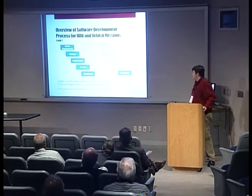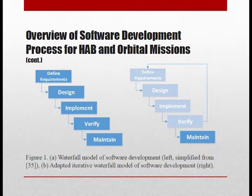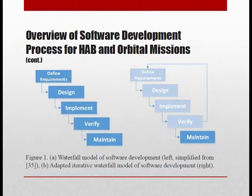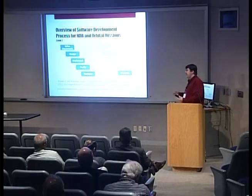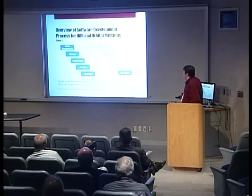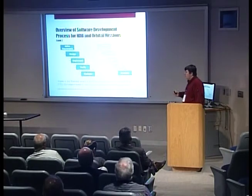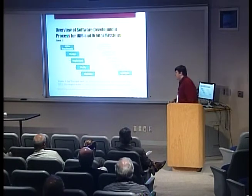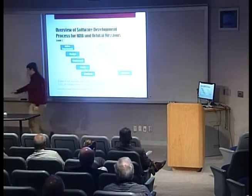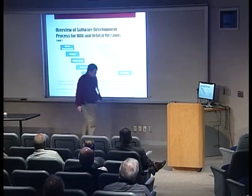Looking at the basic Waterfall model, you begin with defining requirements, then do design work to figure out what you're going to develop, look at implementation, then verify it. This is where you hit the 'waterfall' in the process — when you start actually testing. Then you get into a maintenance mode where hopefully everything works and you're just making small changes based on user feedback. When looking at this in the context of an orbital or balloon mission, you may get things done and then realize you have 30 times the computing capability required than you can fit into your box — so you'll need to iterate.